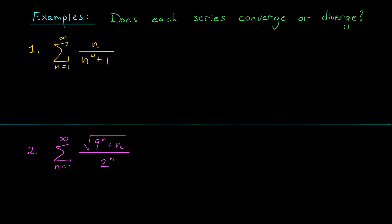To figure out a good comparison, let's take a close look at the expression we're adding up. When n becomes very large, this expression is going to behave sort of like n over n⁴ — the plus one in the denominator is not going to add very much. If I remove the plus one from the denominator, the denominator gets smaller and the entire fraction gets bigger. So n over n⁴ plus one is less than or equal to n over n⁴, which is one over n cubed. We found a simpler expression that's a little bit larger. If the sum of these terms is convergent, then by comparison, our smaller series must be convergent as well.